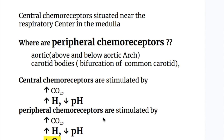The peripheral chemoreceptors are the aortic and carotid bodies. The aortic chemoreceptors are above and below the aortic arch. The carotid body chemoreceptors are at the bifurcation of the common carotid arteries.